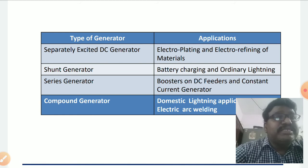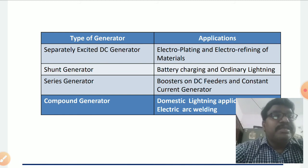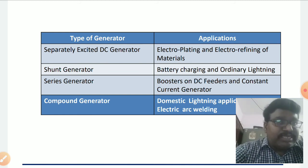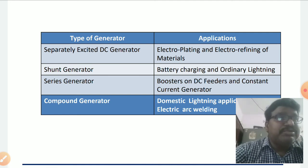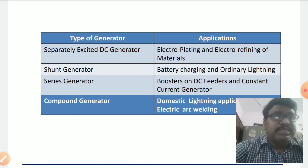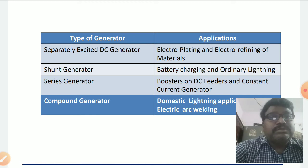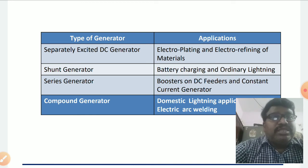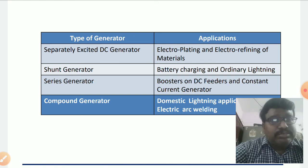The next generator is the series generator. In the case of a series generator, the field current is the same as the load current. Therefore, if there is no load on the generator, the amount of current flowing in the field winding is nearly zero.